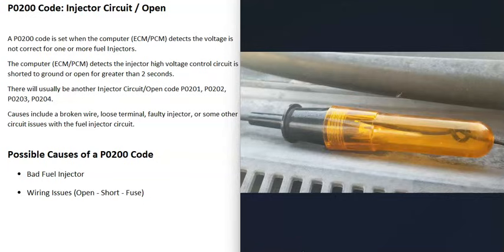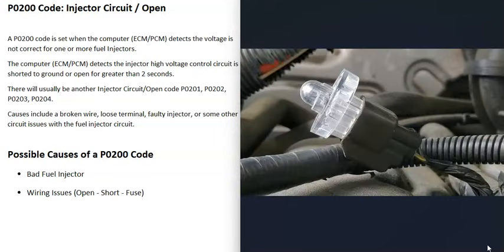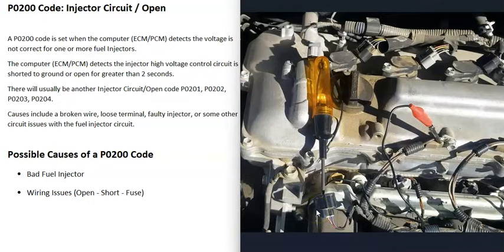You can also test the ground side to make sure the computer is sending a signal. With a 12-volt test light, connect from the positive battery terminal to the ground wire on the fuel injector circuit, start the vehicle, and the light inside should start to pulse slightly. If it's pulsing, it's working. Because this pulse can be hard to see with a standard test light, a lot of people use what's called a noid light — a low-cost device around five dollars. Just plug it into the fuel injector circuit, start the vehicle, and if you see a pulse, it's working. I'll put a link in the description below.